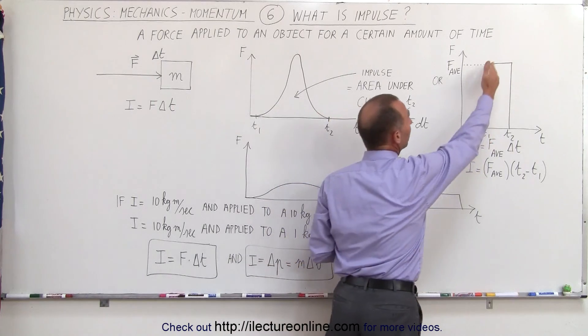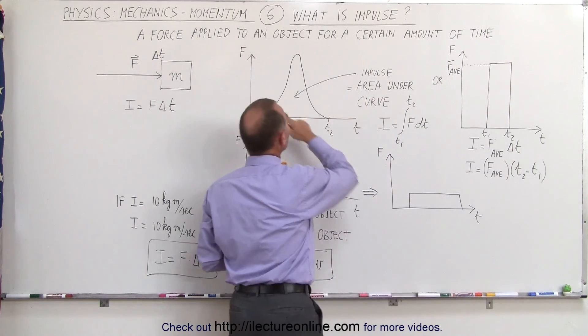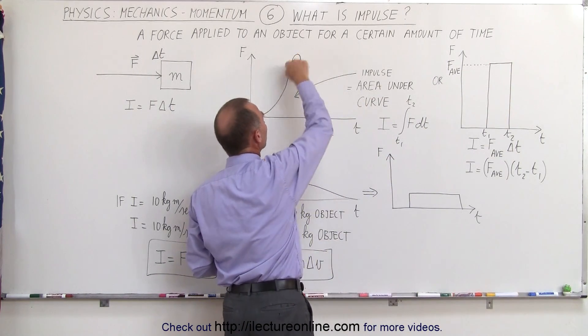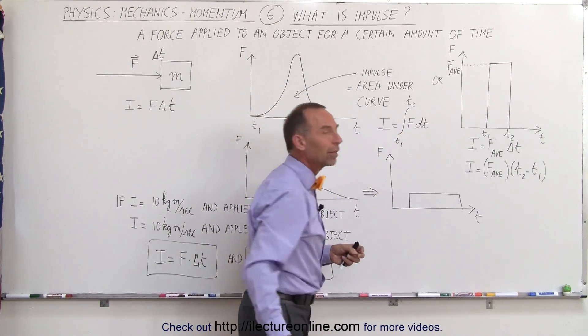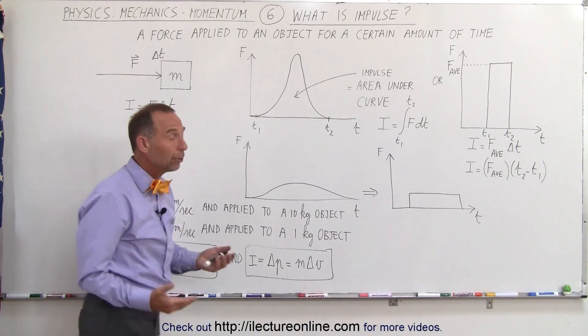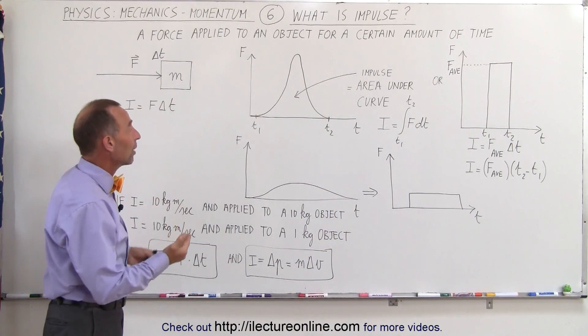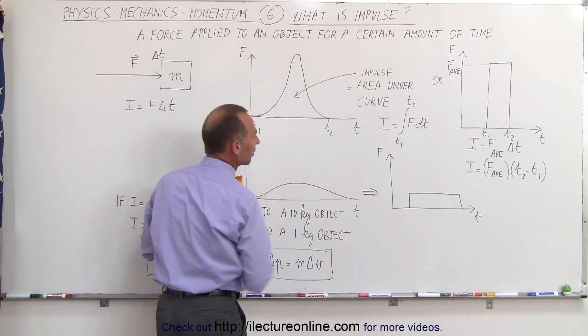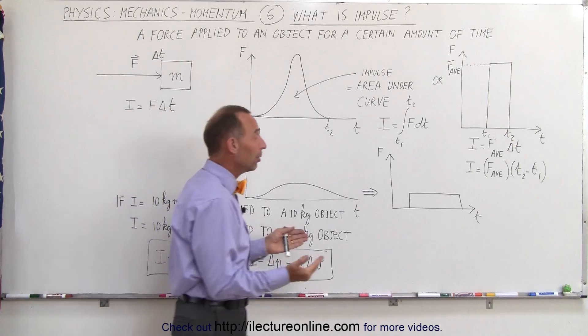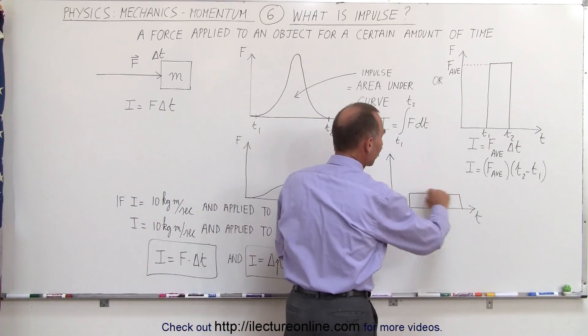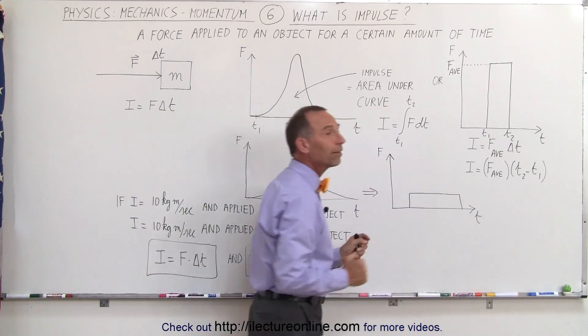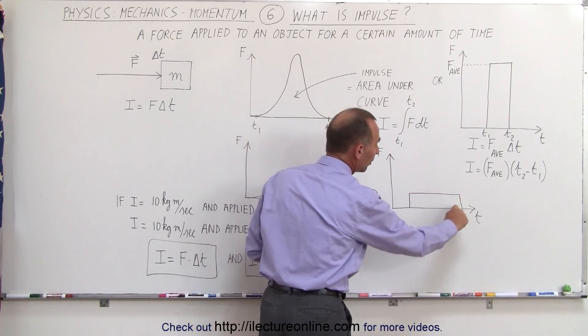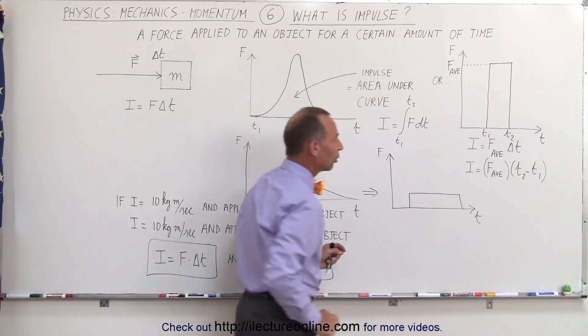Either we approximate it by doing it like this, or we try to find the actual equation of the curve and use the integration method to find it. Now notice, you can have a different situation where the force is not nearly as great but actually over a longer period of time. So in this case, the impulse will look like this. The average force over a large amount of time, and again, the impulse will be the area underneath the curve.